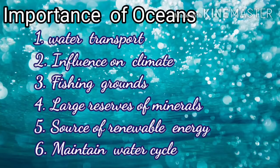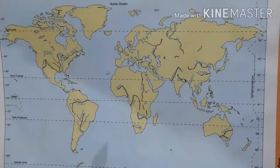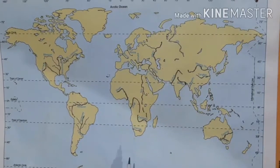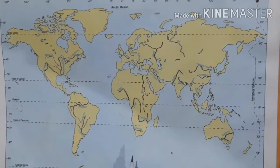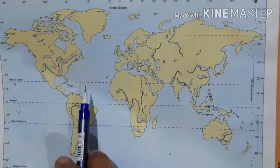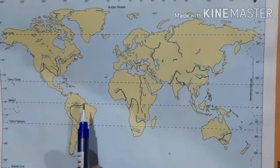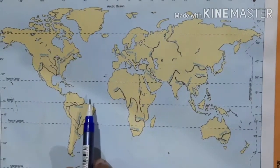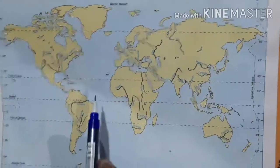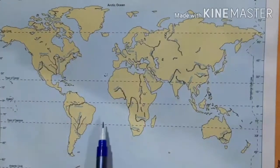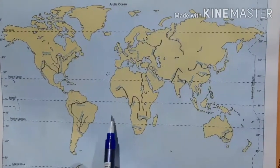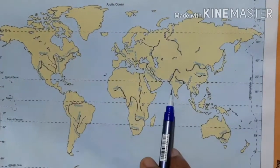Now we can learn about the importance of oceans. Vast oceans and seas help to maintain the hydrological cycle or water cycle. Water evaporates from oceans and seas, which increases humidity in the atmosphere and gives rainfall. We receive rainfall because of the presence of oceans and seas. Oceans and seas are also vast reserves of minerals like petroleum.